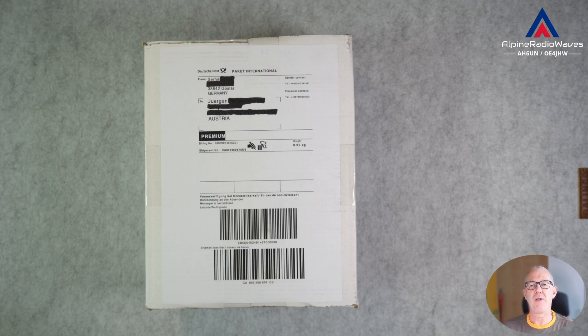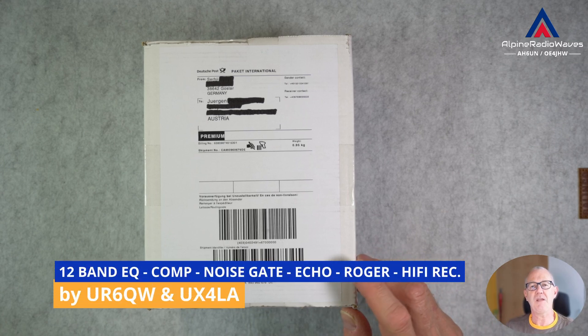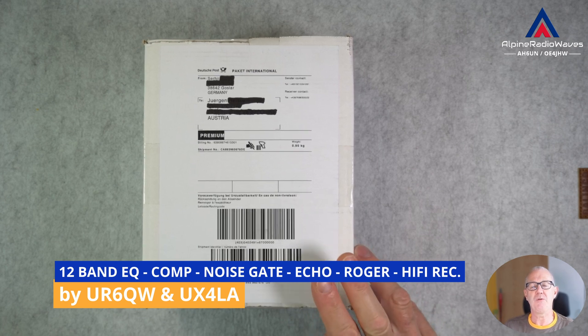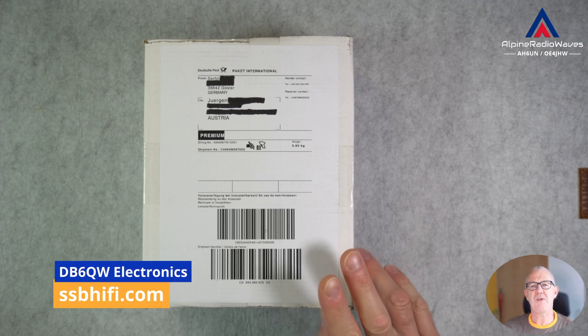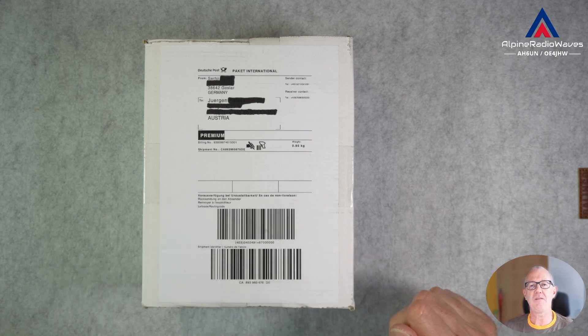Inside this box is a 12-band equalizer with noise gate and compressor and echo made by Serhi, United Radio 6 Quebec Whiskey. His German callsign is Delta Bravo 6 Quebec Whiskey. He also is running a website which is ssbhifi.com. I will link it down in the description.